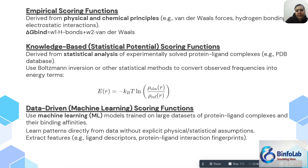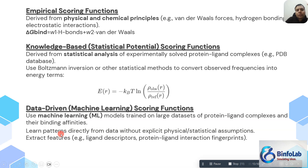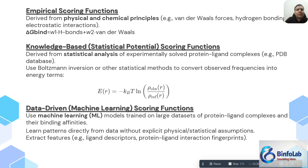Data-driven or machine learning scoring functions use models such as gradient boosting, linear regression, or random forest, trained on protein-ligand complexes from the PDB. These models learn the patterns of connectivity and activity. As a result, there are smaller chances of getting a false positive result, which means the accuracy is on the higher side.